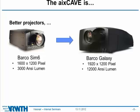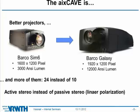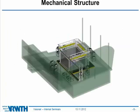The improved pixel count is due to better projectors. In the old cave we had projectors with a resolution of 1600 by 1200 pixels and a brightness of 3,000 lumens. The new cave uses Barco Galaxy projectors with a resolution of HD+ — 1920 by 1200 pixels — and four times the brightness at 12,000 lumens. We are now using 24 projectors instead of 10, and every single projector produces a stereo image via active stereo. Four projectors deliver images for each wall and eight projectors for the floor.